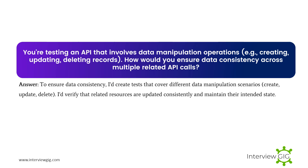You're testing an API that involves data manipulation operations such as creating, updating, and deleting records. How would you ensure data consistency across multiple related API calls? To ensure data consistency, I create tests that cover different data manipulation scenarios — create, update, delete — and verify that related resources are updated consistently and maintain their intended state.